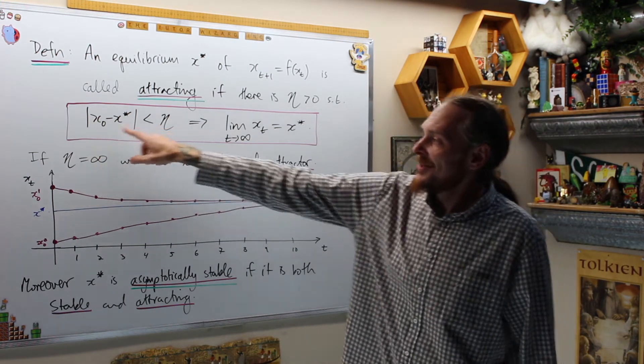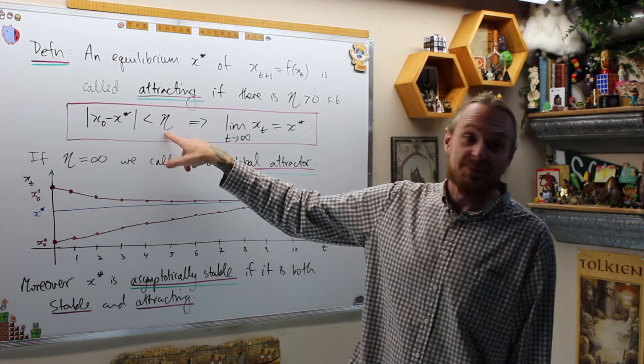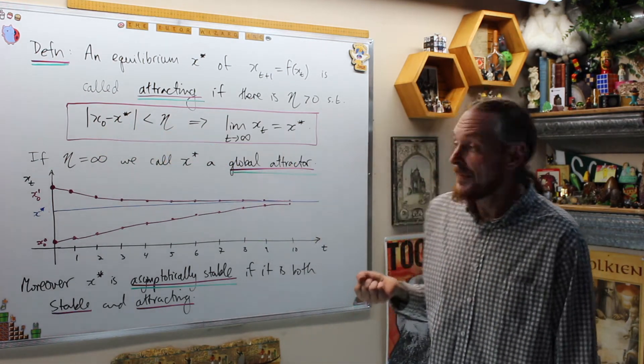And it's going to be called, if eta is, in fact, infinity, so any time this is less than infinity, which is always, it's going to be called a global attractor.